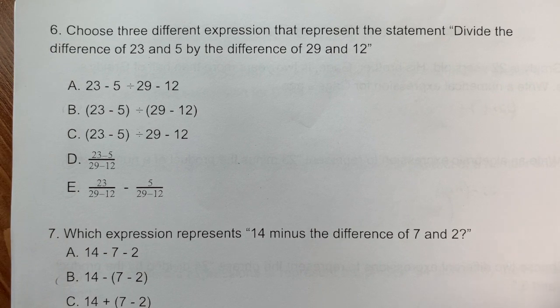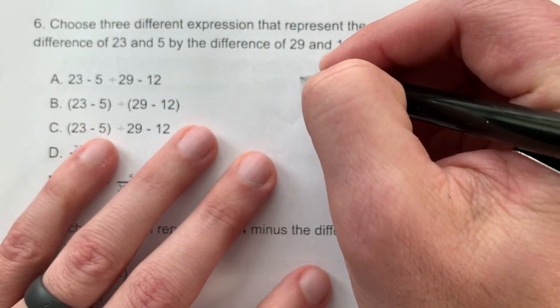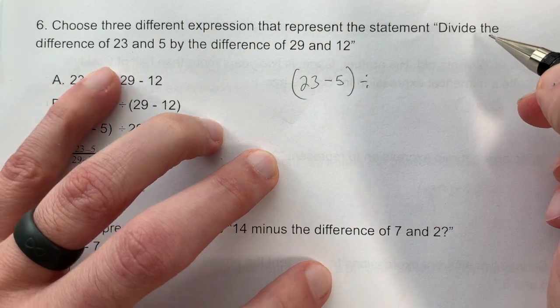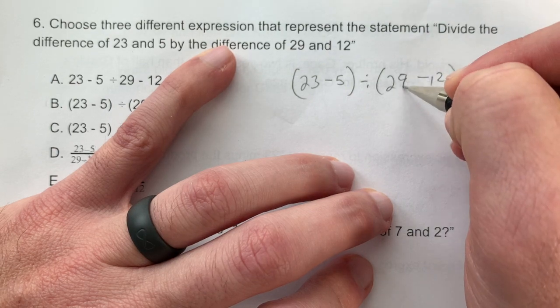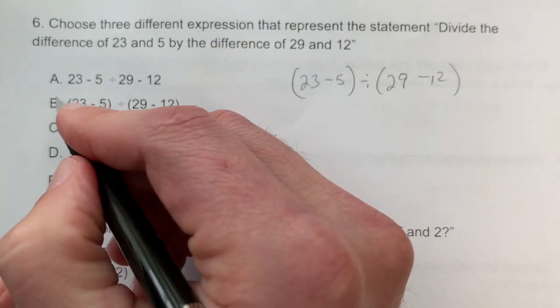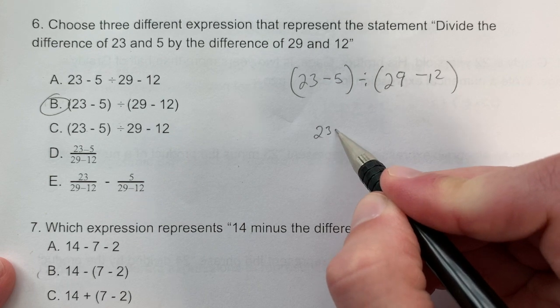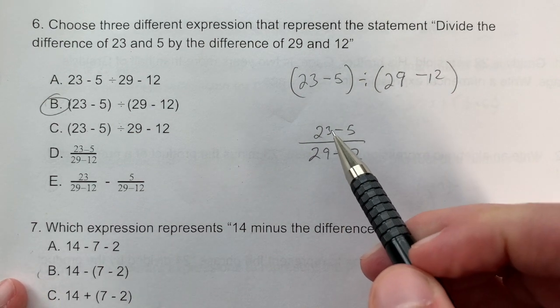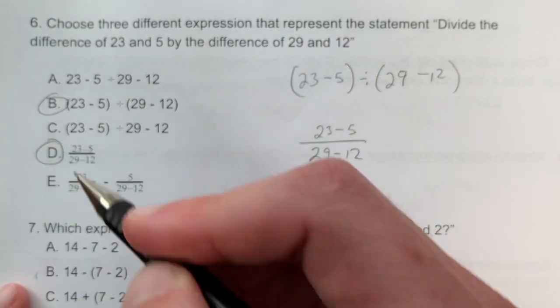Problem 6: Choose 3 expressions for 'divide the difference of 23 and 5 by the difference of 29 and 12.' One way: find the difference of 23 and 5, then divide by the difference of 29 and 12: (23 - 5) ÷ (29 - 12). That's answer B. Another way is writing division vertically as a fraction: (23 - 5)/(29 - 12). That's answer D.